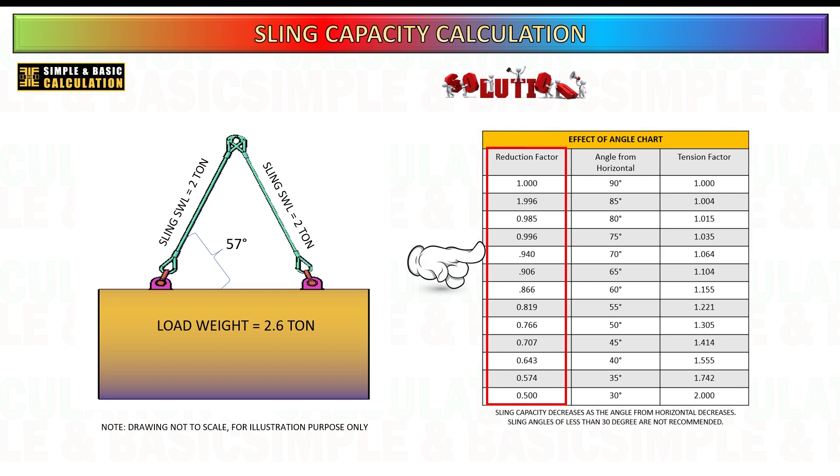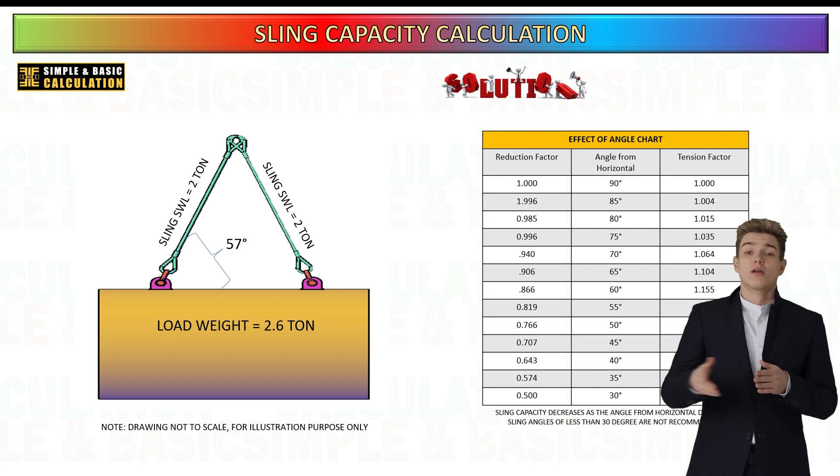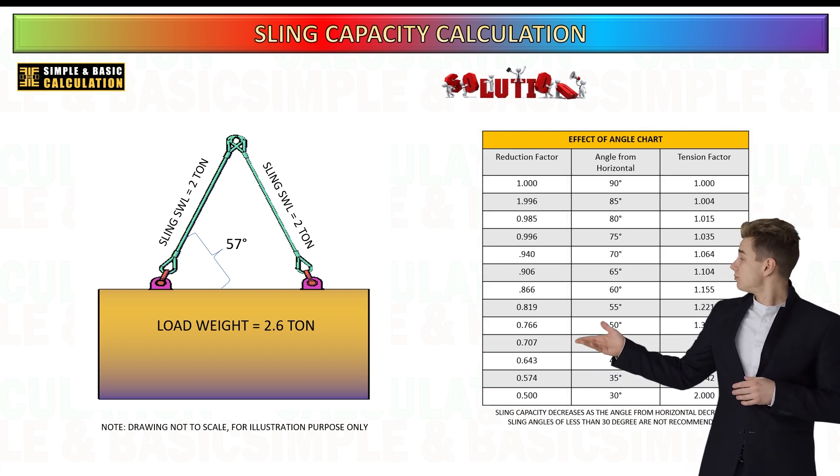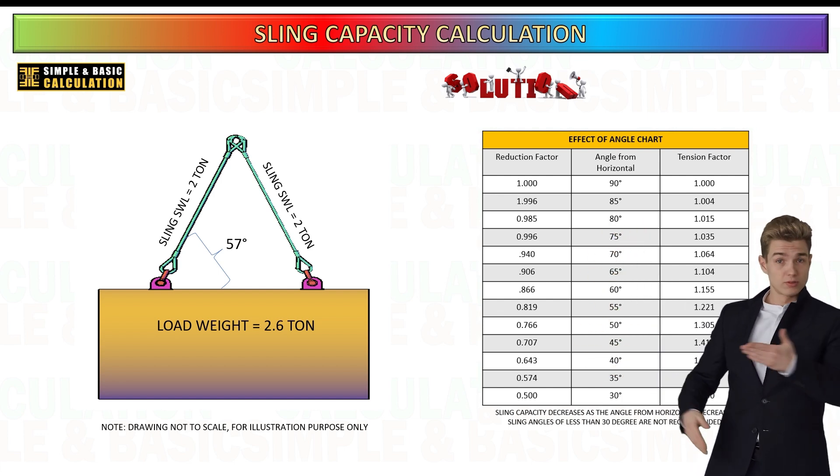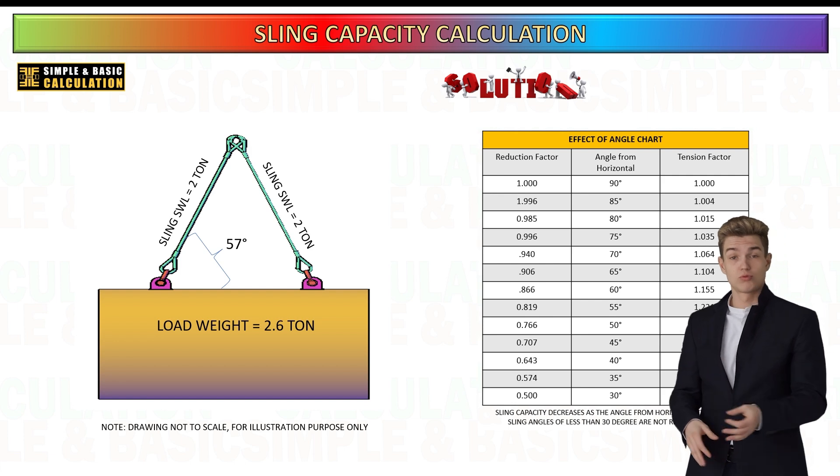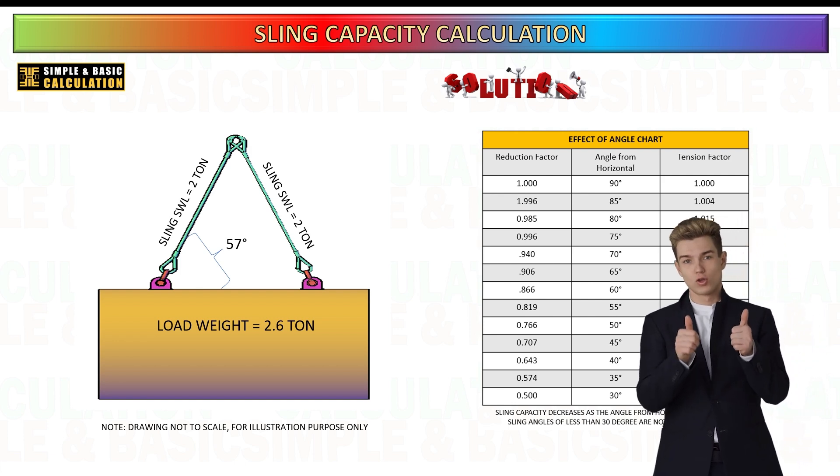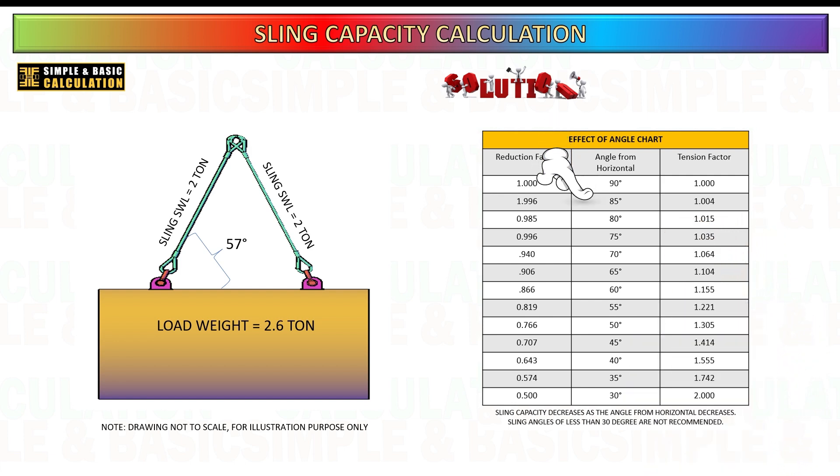If you happen to forget the formula for calculating the reduction factor based on the sling angle, you can easily refer to a pre-prepared chart that provides these factors. These charts are specifically designed to simplify the process of determining the appropriate reduction factor for various sling angles. Here's how to use the chart effectively. Locate the sling angle, identify the angle of the sling relative to the horizontal. This angle is a critical variable in determining the reduction factor.